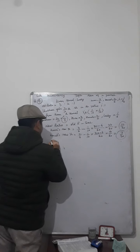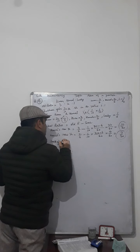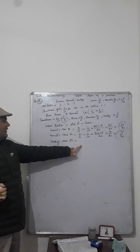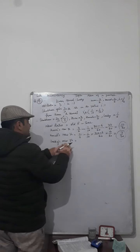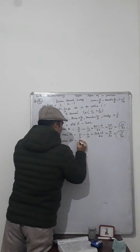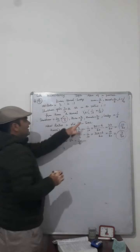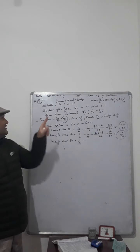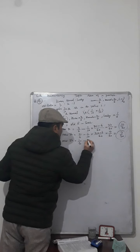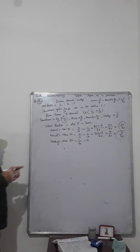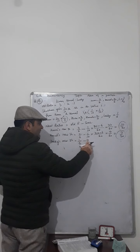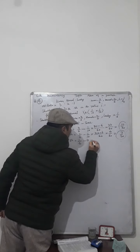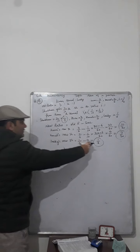Now Lucky's new share. Dear students, this is very important — please pay attention here. Lucky's old ratio is equal to 1 by 6 minus Lucky's sacrifice, which is nothing. Lucky has not sacrificed anything towards Shubham, so Lucky's sacrifice equals 0. Therefore, old ratio minus sacrifice is 1 by 6 minus 0, which equals 1 by 6. Lucky's new share is equal to 1 by 6.